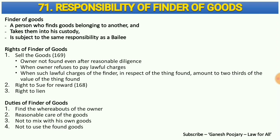Section 71 is really interesting — it creates a quasi-contract between the person who lost goods and the person who found them. Imagine you are walking on a road and find a beautiful watch. The moment you pick it up, there is a contract between you and the person who lost it. Section 71 covers the responsibility of the finder of goods. A person who finds goods belonging to another and takes them into custody is subject to the same responsibility as a bailee. There are three important rights and four important duties of the finder of goods.